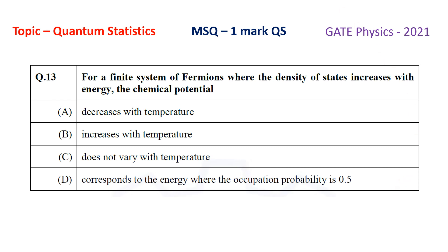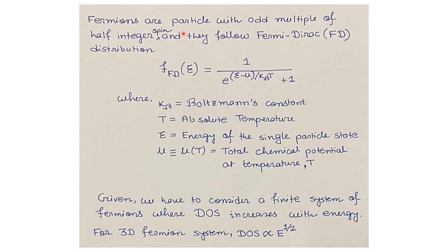We know fermions are particles with odd multiples of half-integer spin and they follow Fermi-Dirac statistics. The Fermi-Dirac distribution function is given by f(E) = 1 / (e^((E − μ) / k_B T) + 1), where k_B is the Boltzmann constant, T is the absolute temperature, E is the energy of the single-particle state, and μ is the chemical potential at temperature T.